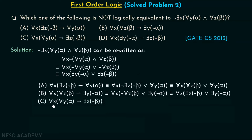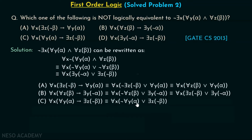Option C: for all x, for all y alpha implies there exists z, not beta. This can be rewritten as: for all x, not for all y alpha, or there exists z, not beta. Moving the negation gives: there exists y, not alpha, or there exists z, not beta. This is equivalent to our target expression.